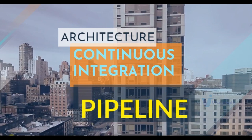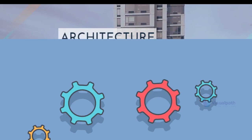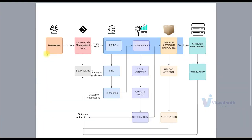Before we get started, we'll see the continuous integration pipeline architecture so you'll have a very clear understanding of what we are trying to achieve. Let's see the workflow first. A developer makes a code change — a commit to the version control system or source code manager. An automation tool will automatically fetch that code, build it, run a unit test, and return the outcome on a Slack channel.